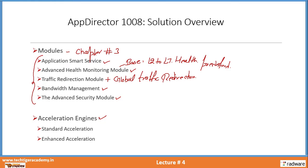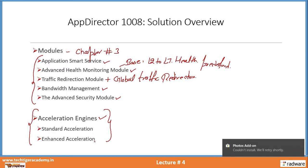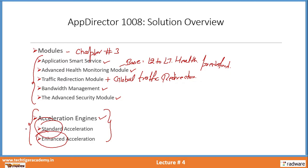That's all knowledge you can grab from chapter number 3. Now let us talk about acceleration engines — these are the fresh topics we need to discuss in lecture number 4. There are basically two types of acceleration schemes available: one is called standard and another is called enhanced acceleration. We will go through each of these acceleration schemes one by one and cover the different features and functionalities provided in each.